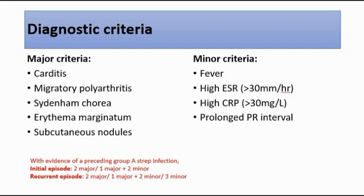For carditis, the evidence might include cardiomegaly, cardiac failure, pericarditis, pathological murmurs heard, or tachycardia out of proportion to fever. These are some of the clues that might suggest carditis.